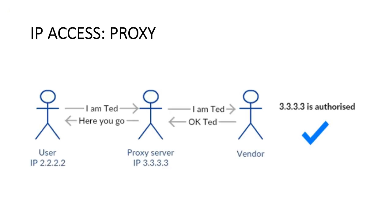Say I'm Ted and I want to access ScienceDirect, but I'm not on campus — I'm accessing from home. I go to my library portal, click on the proxy link, and then the proxy server makes that request to ScienceDirect on my behalf, saying 'Hi, I'm Ted — here's my IP address, which belongs to the university.' ScienceDirect sees the IP address matches, Ted is authorized, and sends back the content to the proxy server, which sends the content back to Ted. In that way, it is indeed man-in-the-middle in the truest sense — it sees all of your traffic.